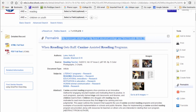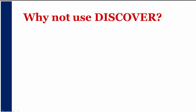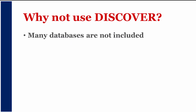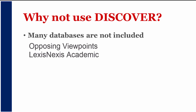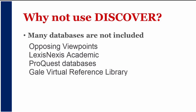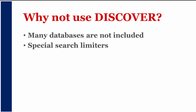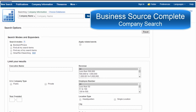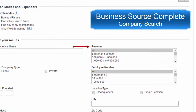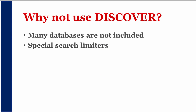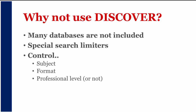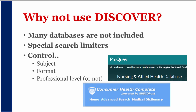That is the gist of how to use the Discover tool. But there are times you may not want to use it — for example, the Discover tool doesn't include all of our databases. We frequently recommend Opposing Viewpoints, LexisNexis, ProQuest databases, and Gale Virtual Reference Library, but these are not included in the Discover search. Additionally, individual databases may offer specialized search limiters not in Discover — for example, in Business Source Complete, you can search by company revenue, number of employees, and location. Using specific databases can also help you control the type and subject level of information you find.